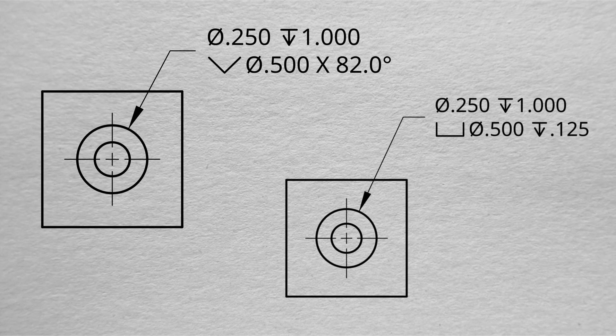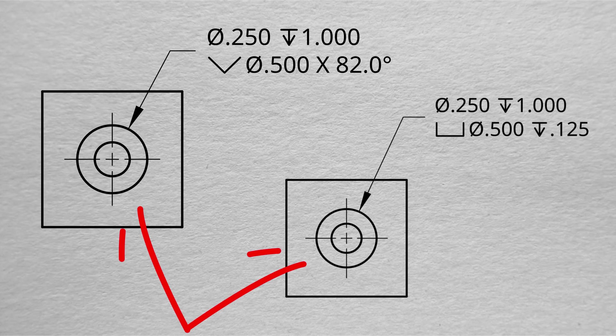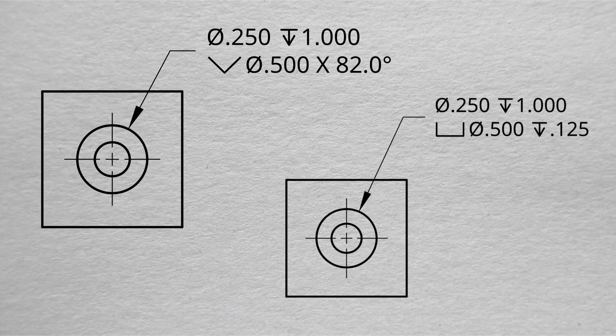And our final comparison is going to be between a counterbore and a countersink. Again, looking at these visually, there is no difference. If we did not have the whole notation on there, we would not be able to tell the difference between the two. When we do look at the notation, though, we get very different stories.